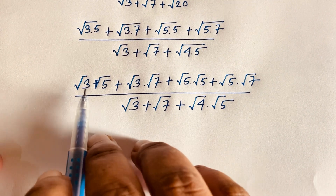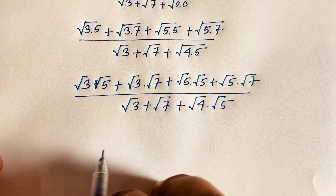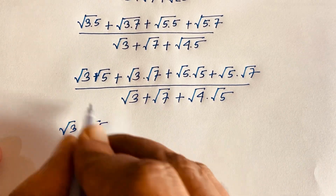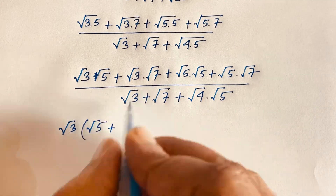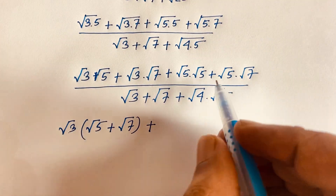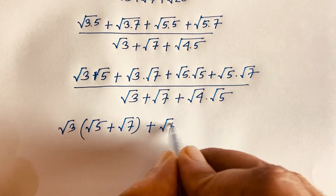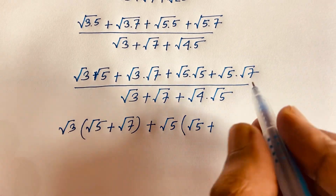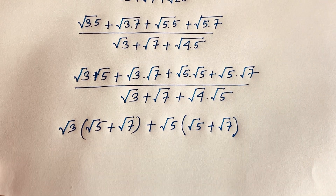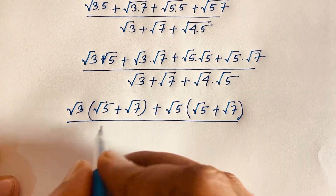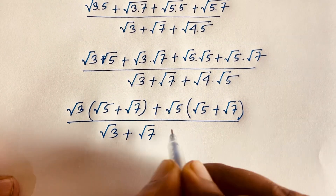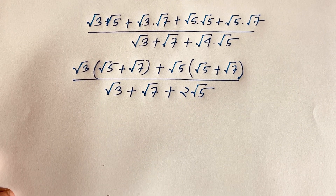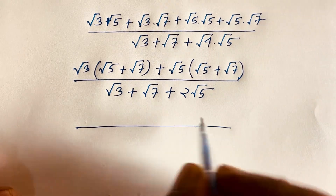Now look at this expression. Square root 3 is common in the first two terms of the numerator, so we factor it out as square root 3. Dividing, this gives square root 5, and this cancels to give square root 7. Then square root 5 is common in the remaining terms, so we factor out square root 5. The denominator becomes square root 3 plus square root 7 plus 2 times square root 5.